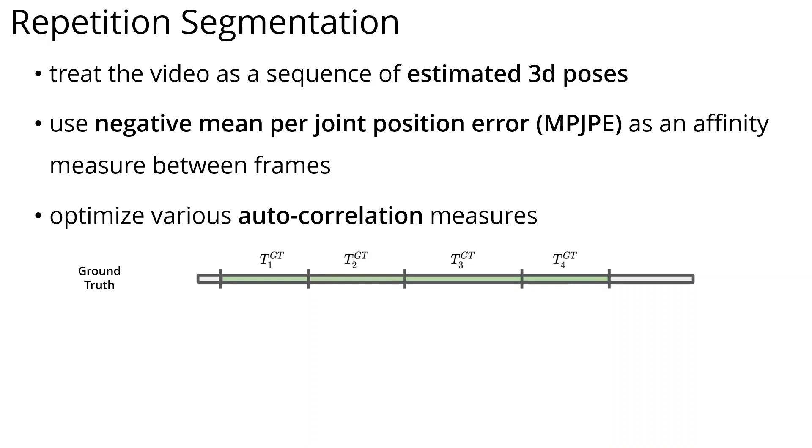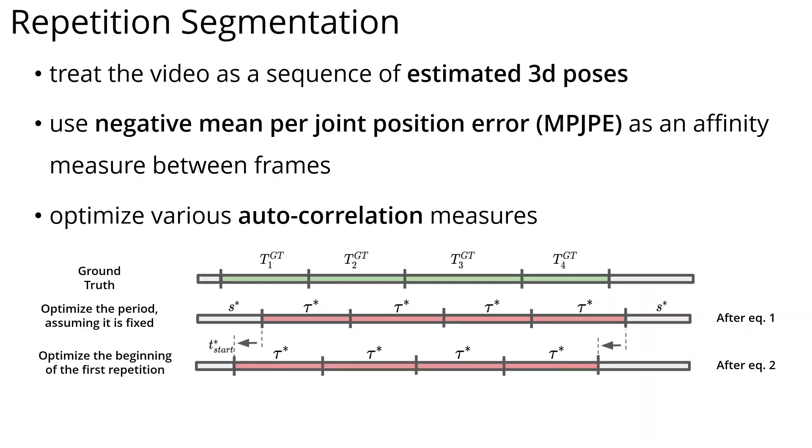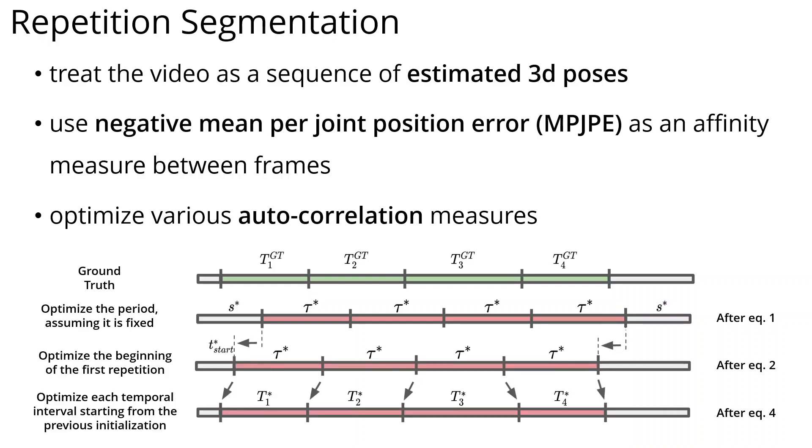Here we show ground-truth repetition segmentation. In our method, we first optimize the repetition period, assuming it is fixed. Then we optimize the beginning of the first repetition, and use it as an initialization for a final optimization, where we drop the fixed period constraint.